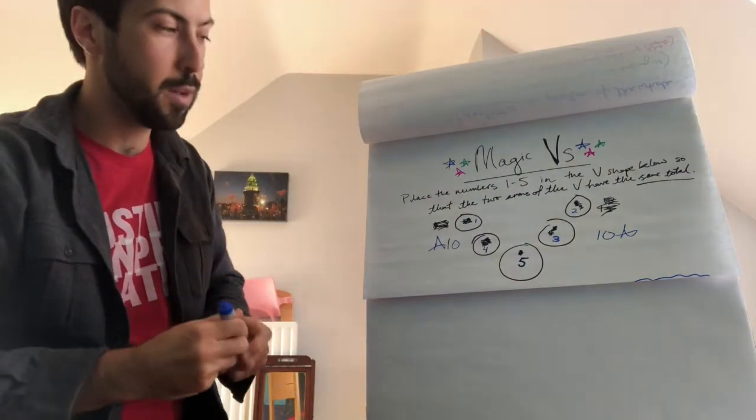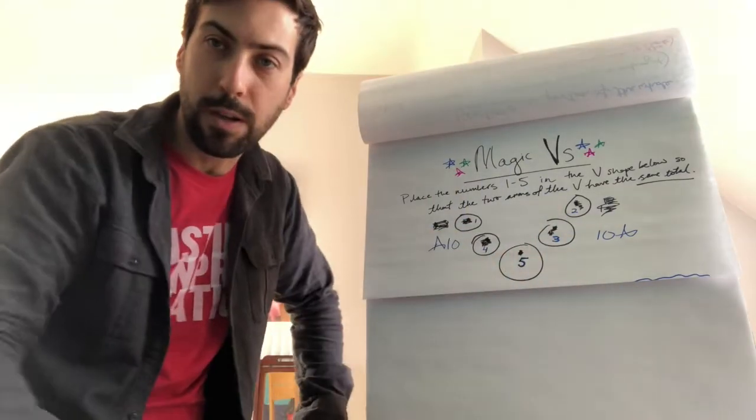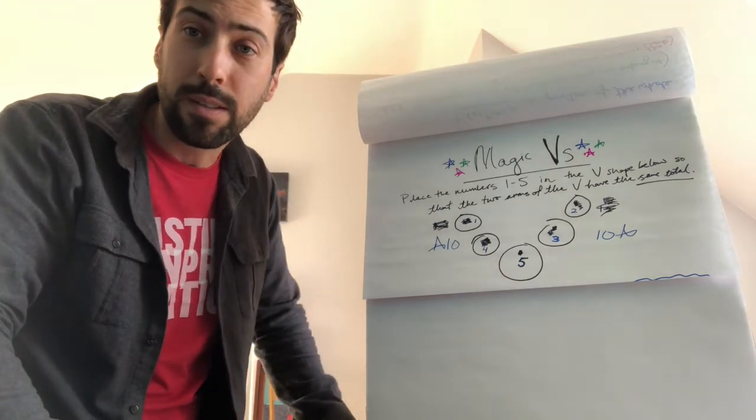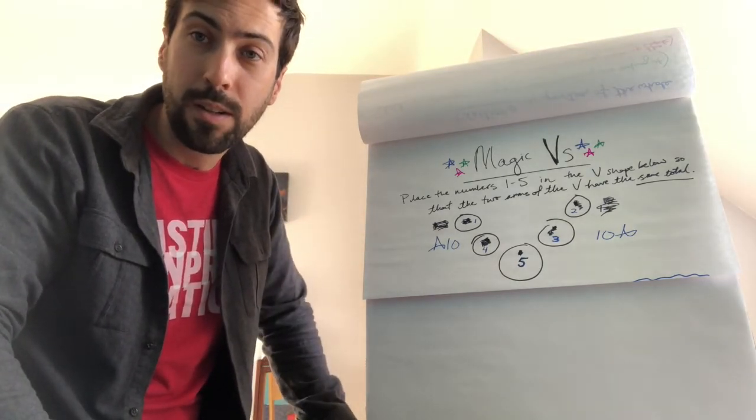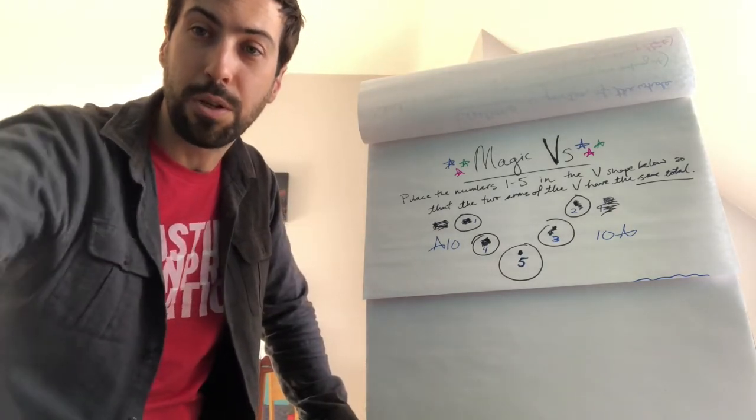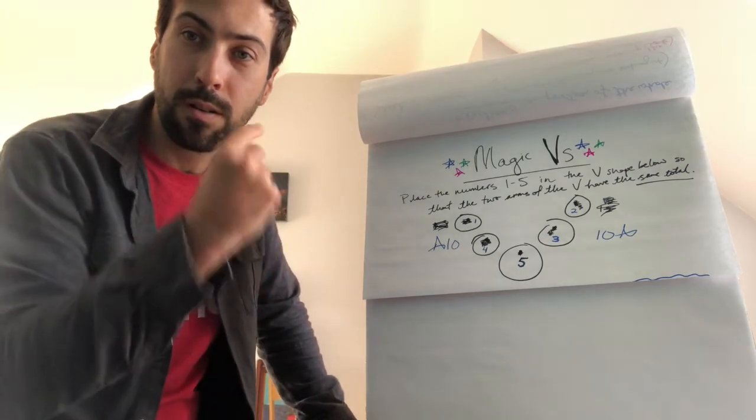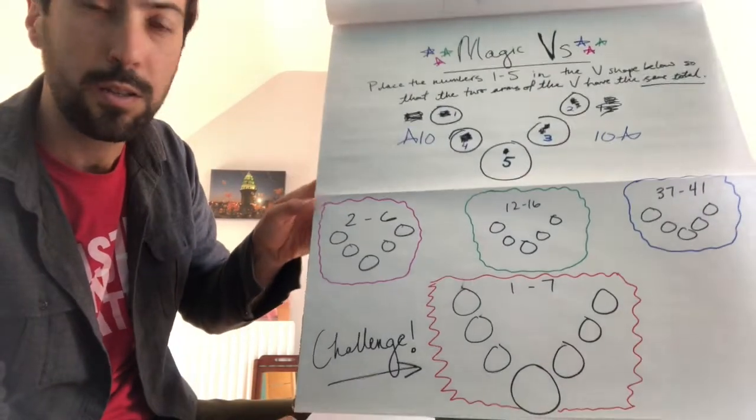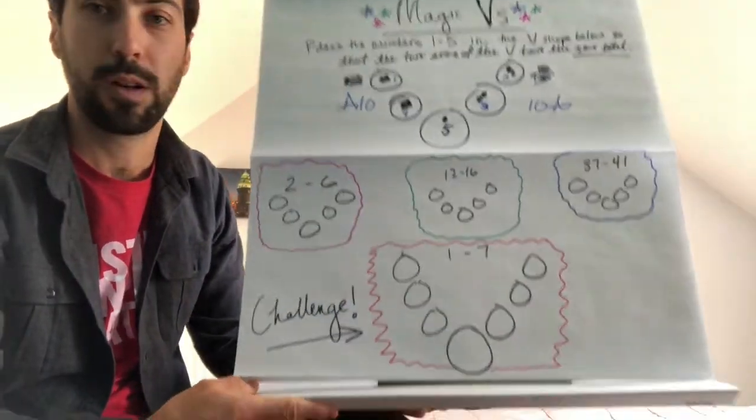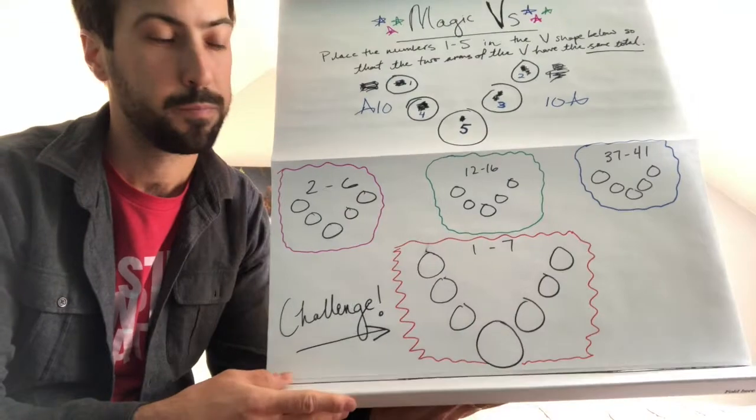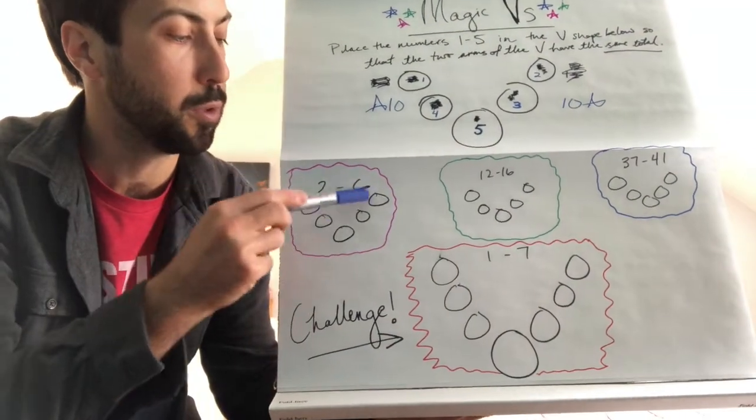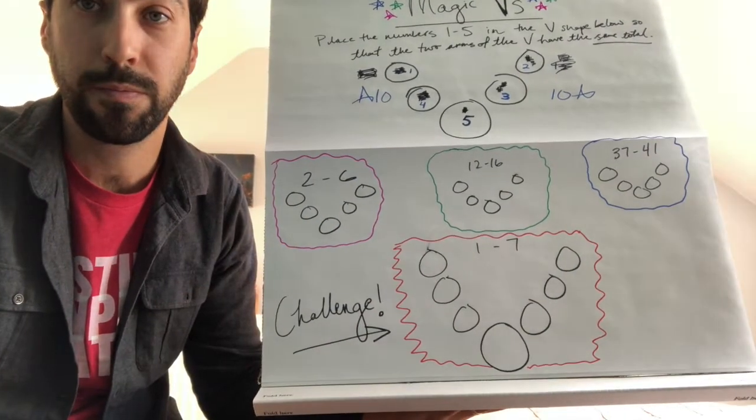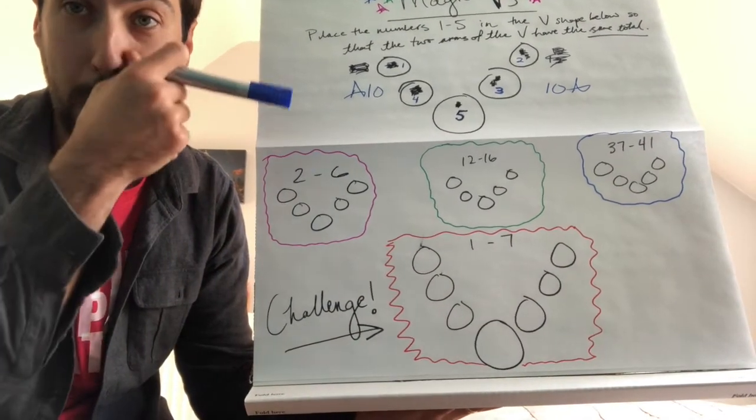So your challenge this week, can you figure out any other combination of the numbers 1 through 5 in the v-shape below? And I'm gonna snap my fingers, and your other challenges are going to appear below. So your other challenges are here. Can you figure out a way to place the numbers 2 through 6 in the v-shape below? Get the same total. How would you do that?